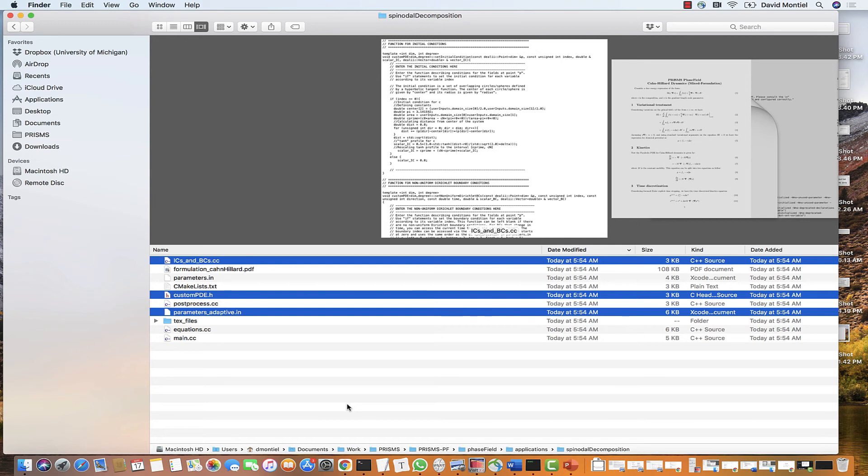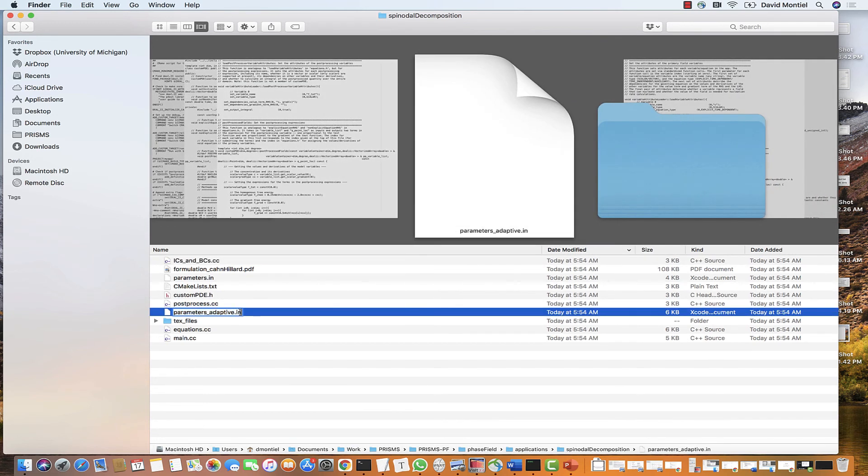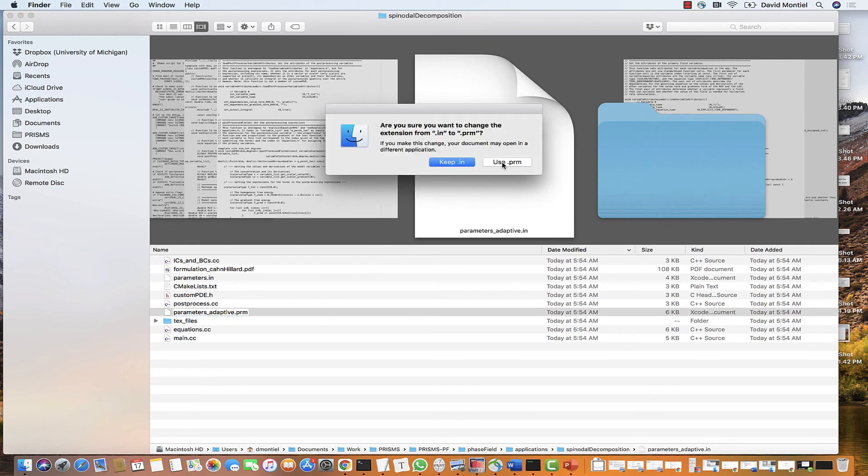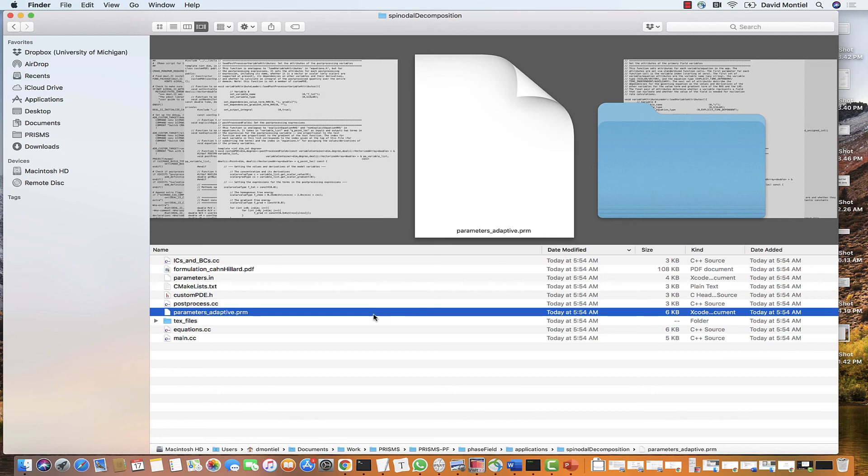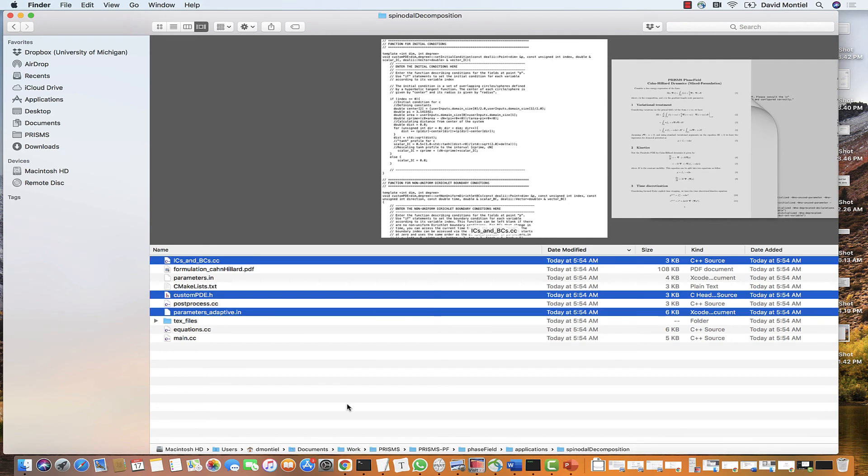Let's start with parameters. Again, we will use this one, parameters adaptive. But before we go into editing, I am going to rename this file and change the extension to .prm because this extension is required by the latest versions of deal 2. Okay, let's open the files.